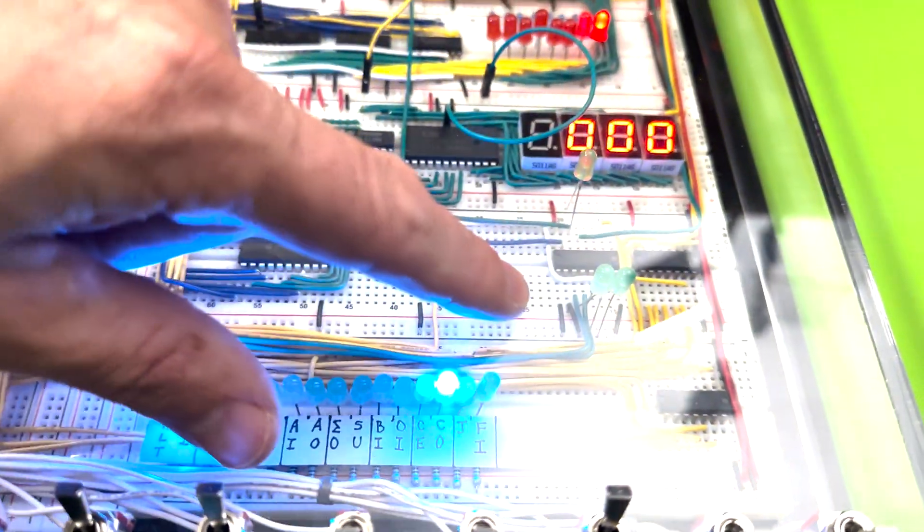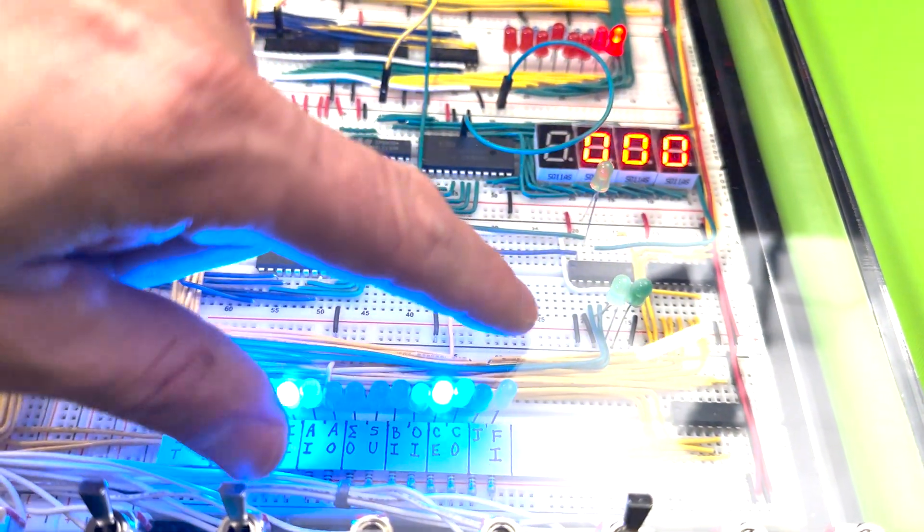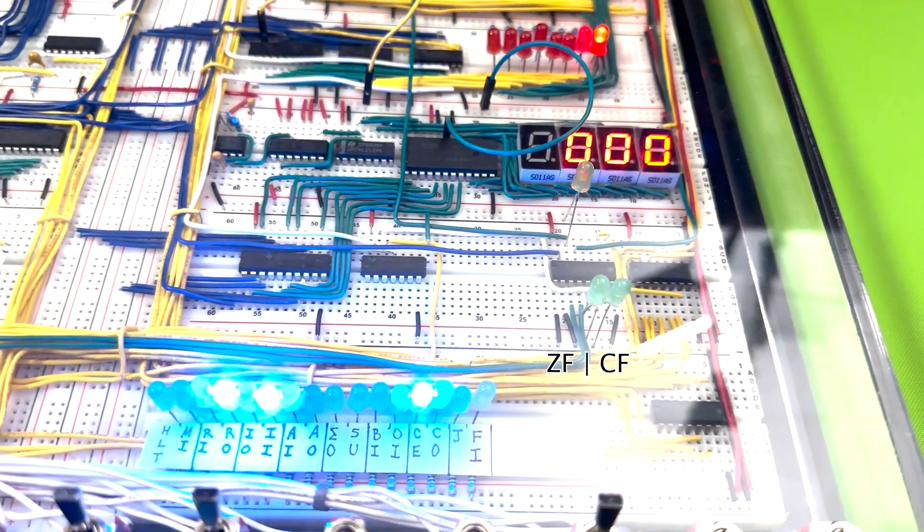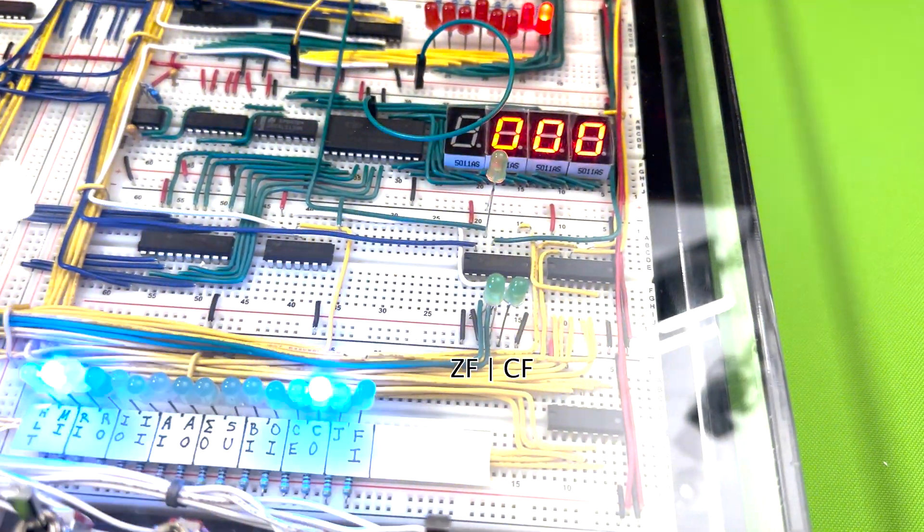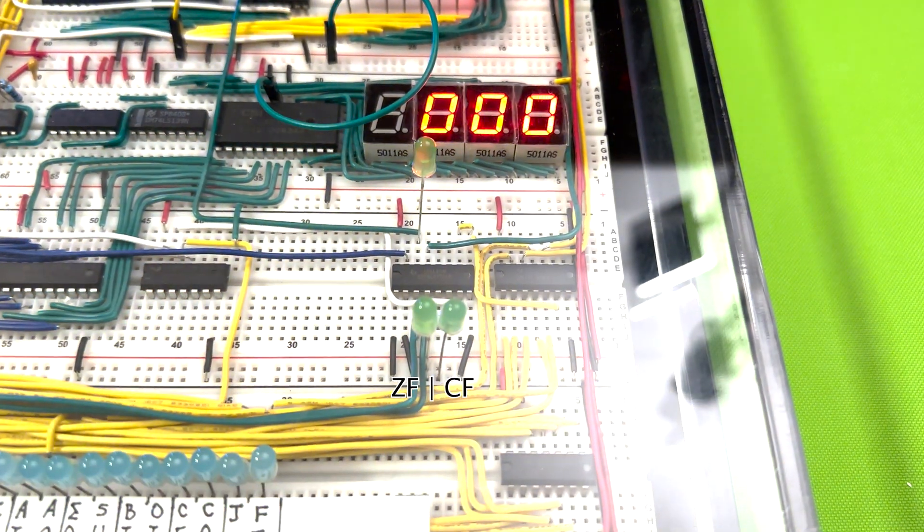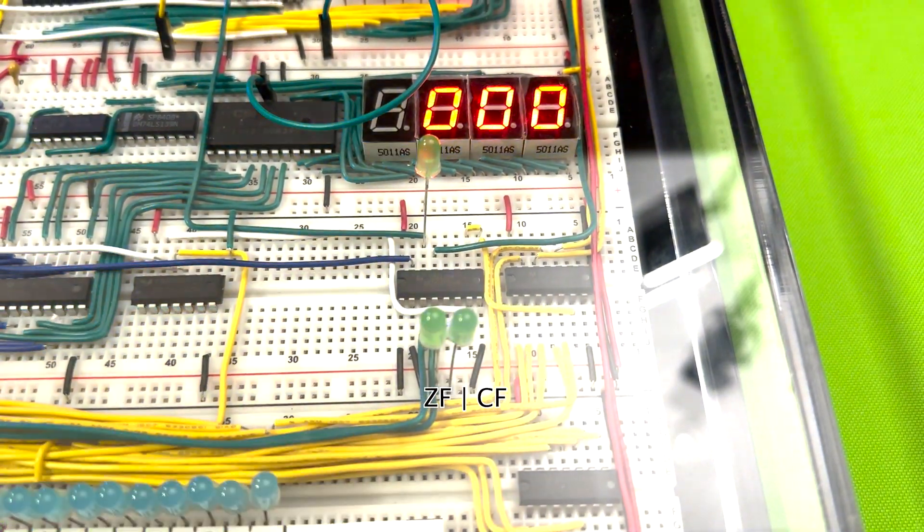Under the output register is the flags register, and it's used to latch flag values to be used by the micro-instruction register. For example, if the last sum in the accumulator was zero, the ZF value will be latched, and the micro-instruction can check for that value and act on it if necessary.